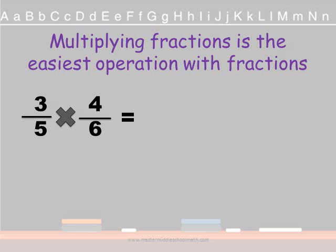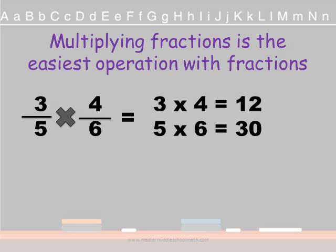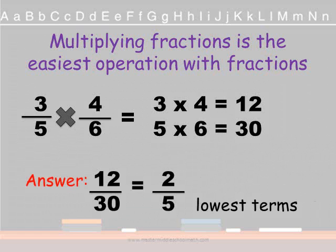Multiplying fractions is the easiest operation with fractions. It's the easiest because you do not have to worry about a common denominator. So here we have some fractions: 3 fifths times 4 sixths. All you have to do is multiply straight across. You multiply the numerators and you multiply the denominators. So in this case it will be 3 times 4 equals 12, 5 times 6 equals 30. So our new fraction, the answer is 12 thirtieths, 12 over 30.